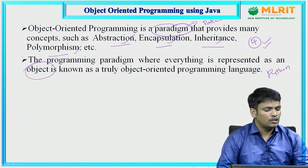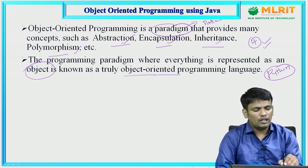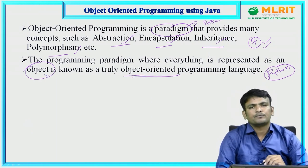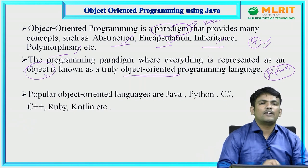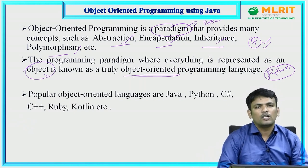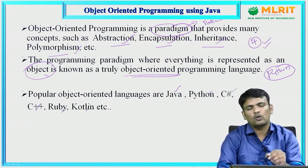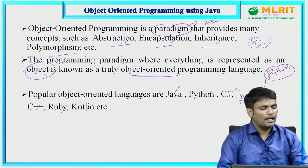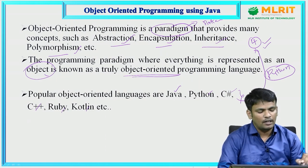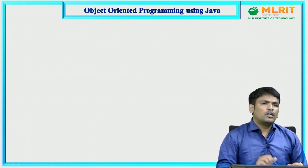In truly object-oriented programming, everything will be treated as an object. In the market, we have different object-oriented programming languages available: Java, Python, C#, C++, Ruby, and Kotlin. All these languages support the four OOP principles, so we call them object-oriented programming languages.